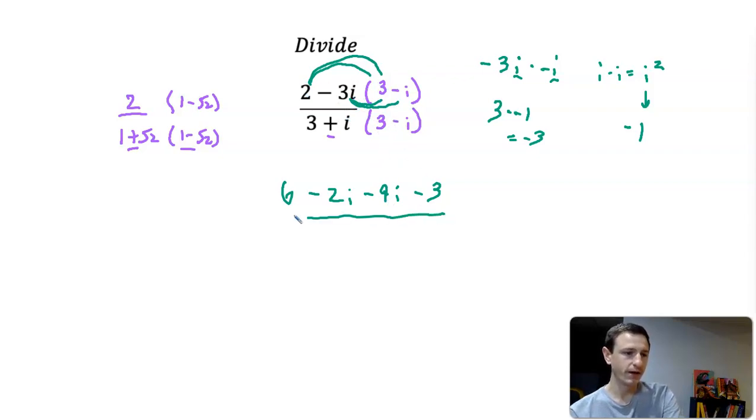Now on the bottom, the whole reason why we multiply by the conjugate is so we don't have to do this middle part. On the bottom I don't need to do that—it's just going to be 3 times 3 which is 9.